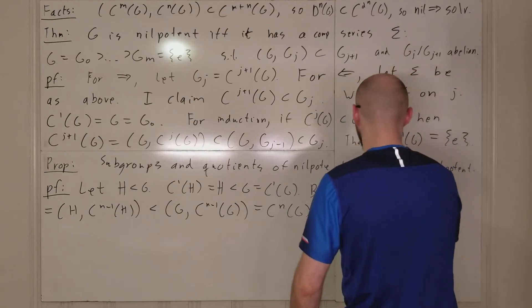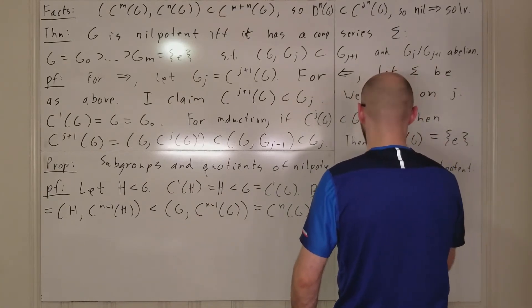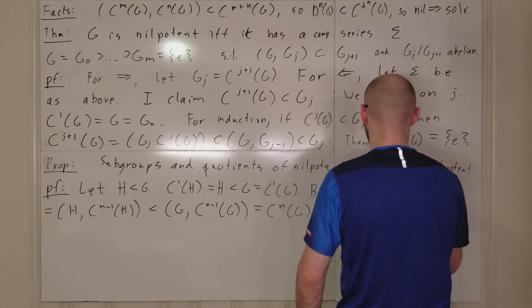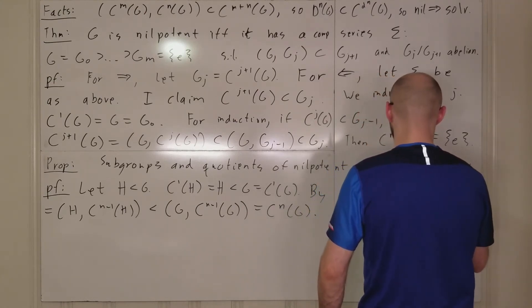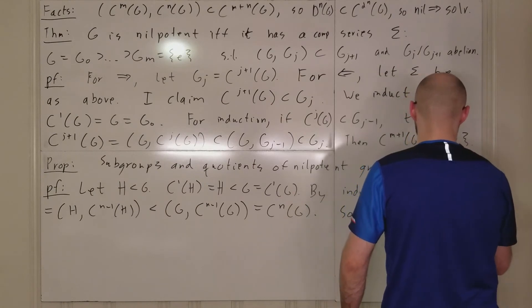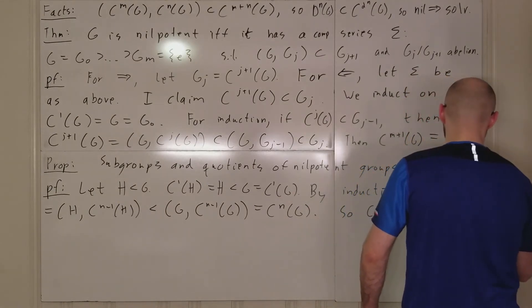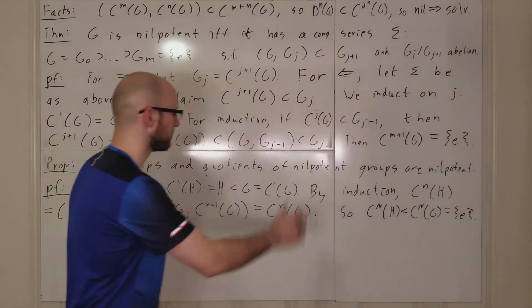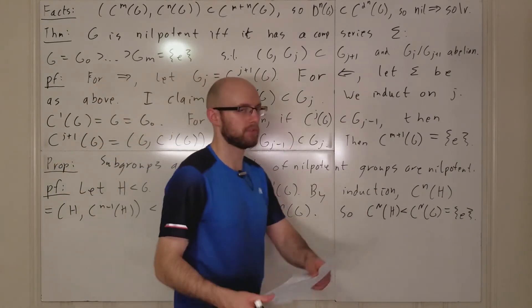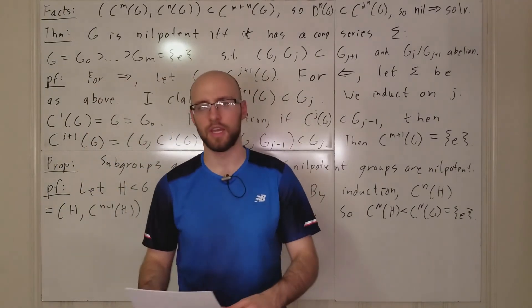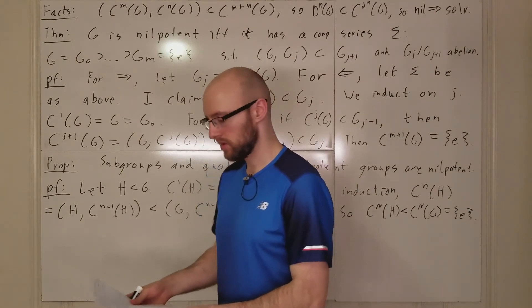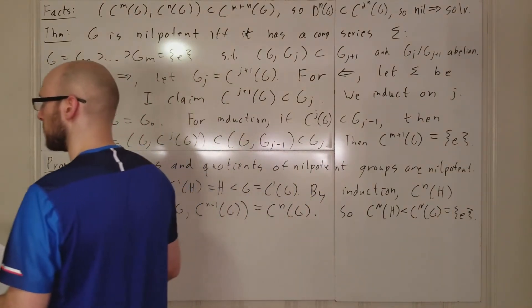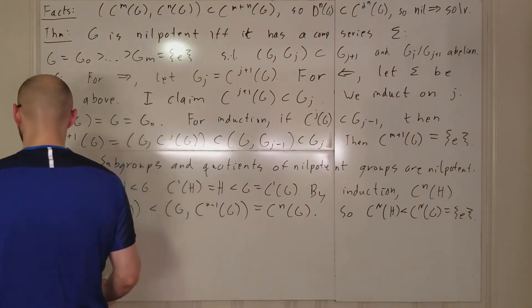So C^n(H) ⊆ C^n(G) for all n. Let capital N be the index such that C^N(G) is trivial. Then C^N(H) ⊆ C^N(G) = trivial, so C^N(H) is trivial and H is nilpotent. Now we look at quotients.